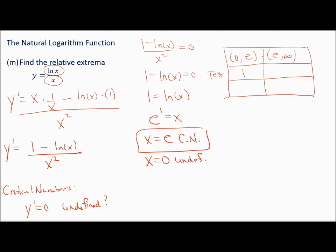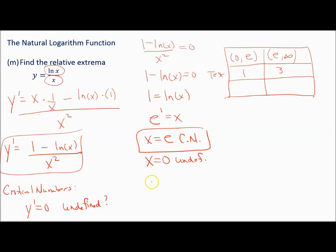I'll take a test point and plug it into the first derivative. We could plug in 1 — that's between zero and e, since e is about 2.71828. Then from e to infinity, let's plug in 3.